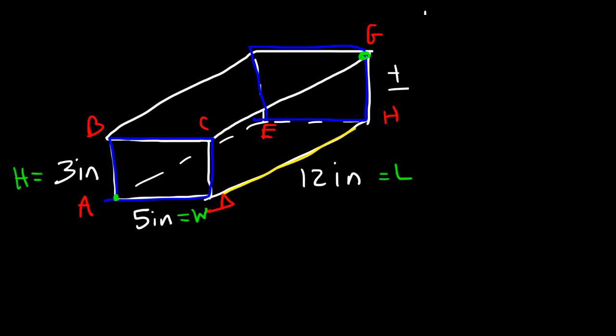So first let's draw a right triangle between A and F. If we call this L, to calculate L we can use the Pythagorean theorem using W and capital L. So lowercase L, or L squared, is going to be W squared plus capital L squared.